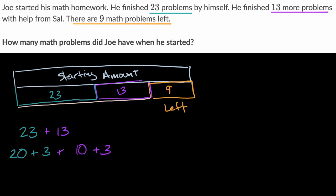That's the same thing as, if I just look at the tens right over there, 20 plus 10 plus 3 plus 3. Twenty plus 10 is 30, plus 3 plus 3 is 6. So this is equal to 36.